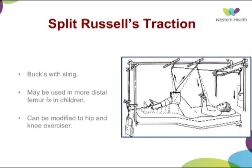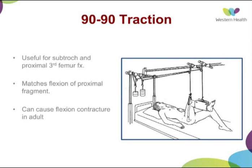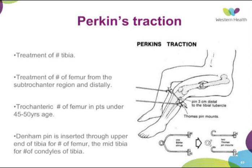Split-drop traction is a suspension-type traction that has been used widely in the past — it can be used in femoral shaft fractures in children and can modify hip position when used. The 90-90 traction has been used for pelvic fractures as well as subtrochanteric and proximal third femoral fractures, where they tried to match the position to the proximal fragment. One issue with 90-90 traction in adults is skin pressure contact complications.